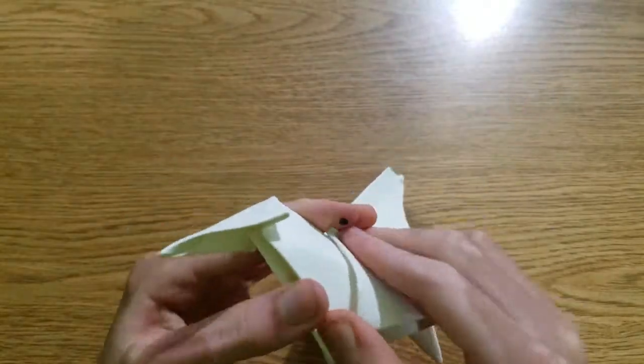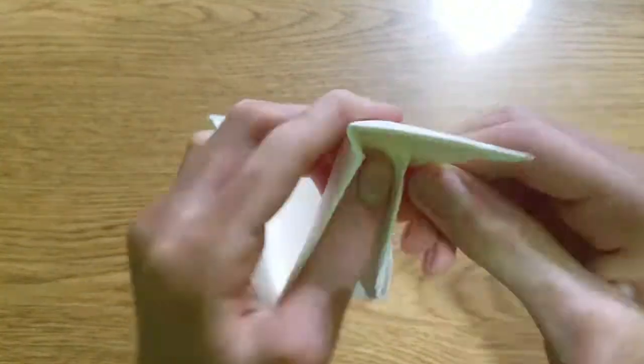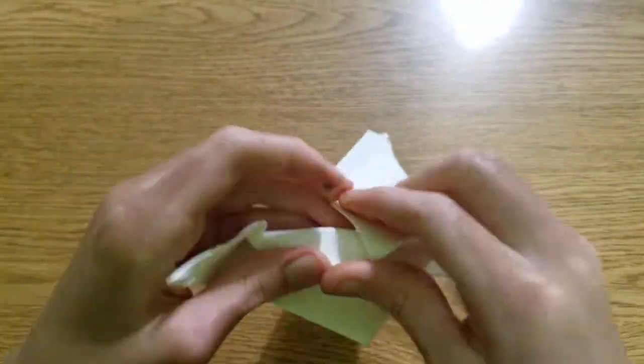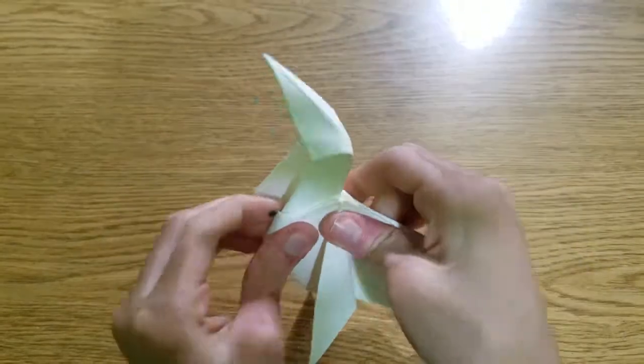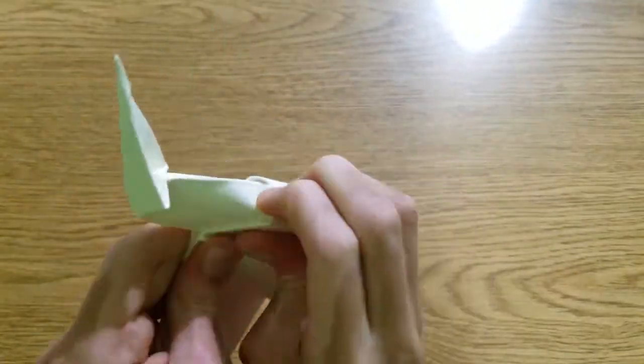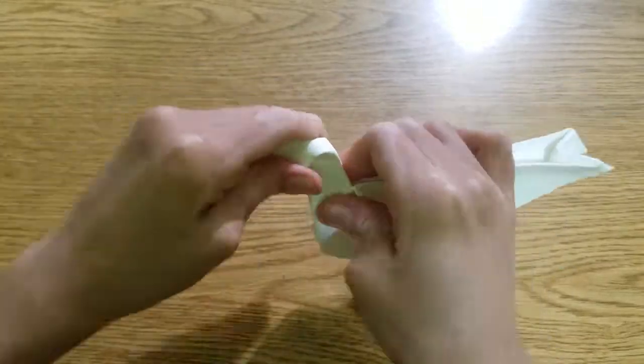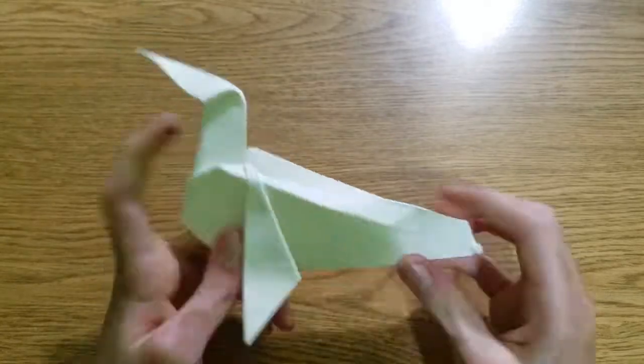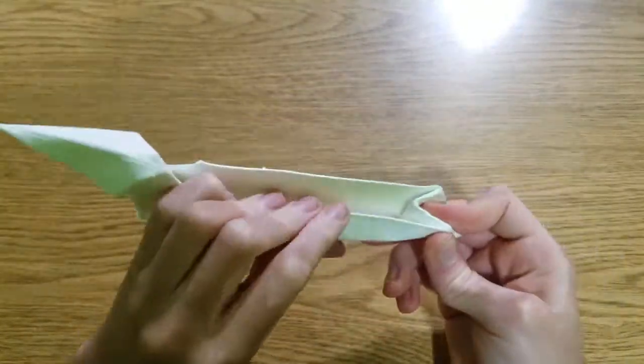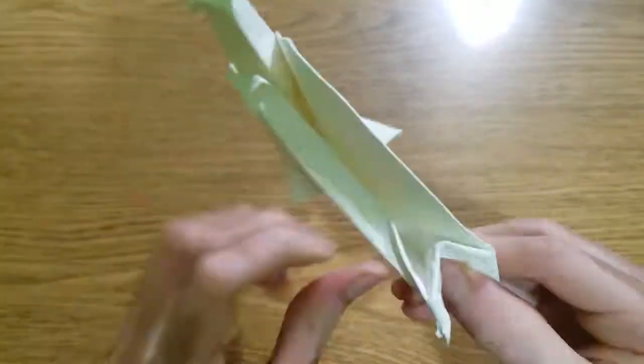I narrowed the neck and locked the head in place at the same time. Now I'll fold along the crease that I already made, but this time making it a mountain fold. A new crease will also be created.